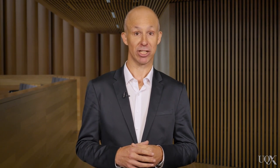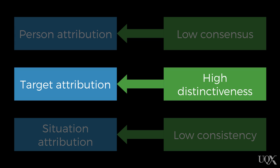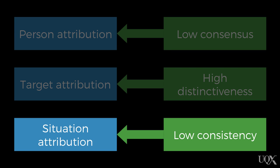A person attribution is when we attribute the cause of the behaviour to the person performing the behaviour. We would make this attribution when there's information about a low level of consensus — this person performs the behaviour, but not other people. We can make a target attribution when there's information that the behaviour is highly distinctive; that is, we would say that the person who is the target or recipient of the behaviour is the cause when the behaviour is enacted towards this target, but not other targets. Finally, we could make a situational attribution when that behaviour is due to something in the context or situation, when there's low consistency in performing the behaviour — meaning the behaviour is performed in some contexts or situations, but not others.